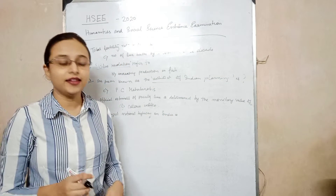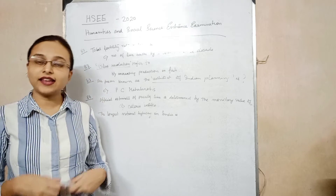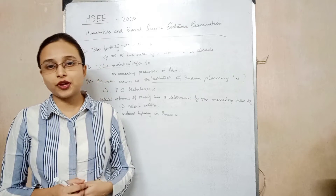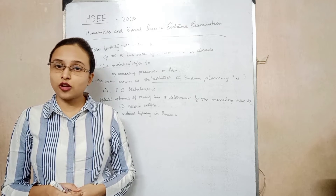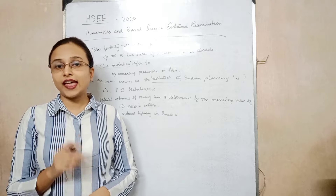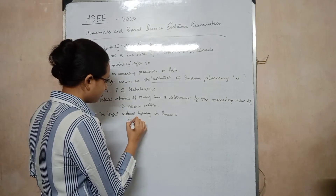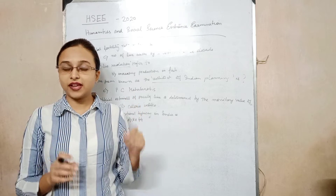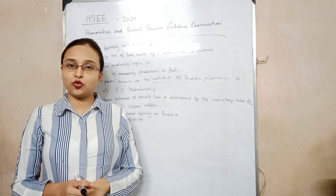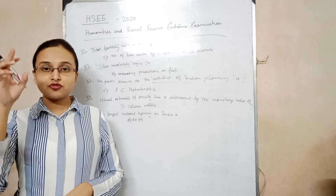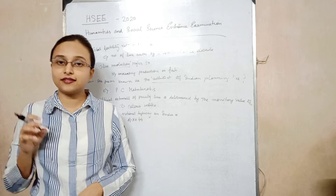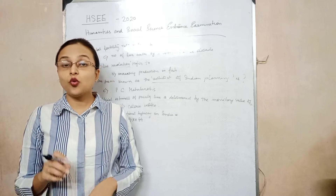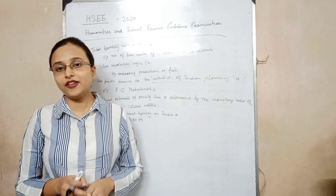The options are: NH1, NH12, NH16, and NH44. The correct option is D — NH44. NH44 is a national highway which connects places from Srinagar to Kanyakumari — from the top north of India to the southernmost point. You can imagine the distance, making it the longest national highway of India.